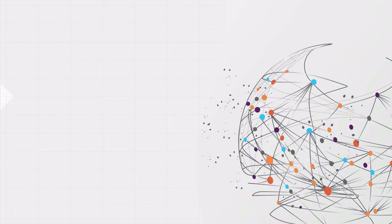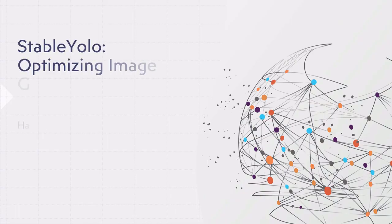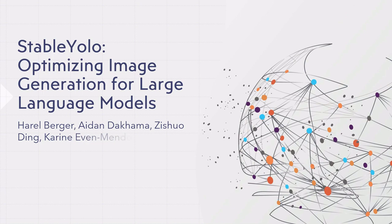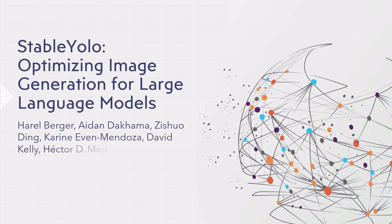In the last few months, I started working on a project called Stable YOLO, and I worked with several co-authors. This is a paper that we recently presented, called Stable YOLO: Optimizing Image Generation for Large Language Models. It was a collaboration between my colleagues from King's College London and UCL.